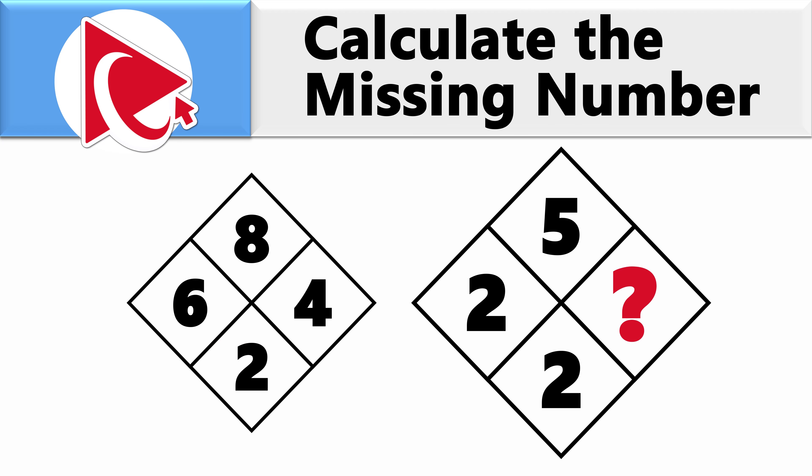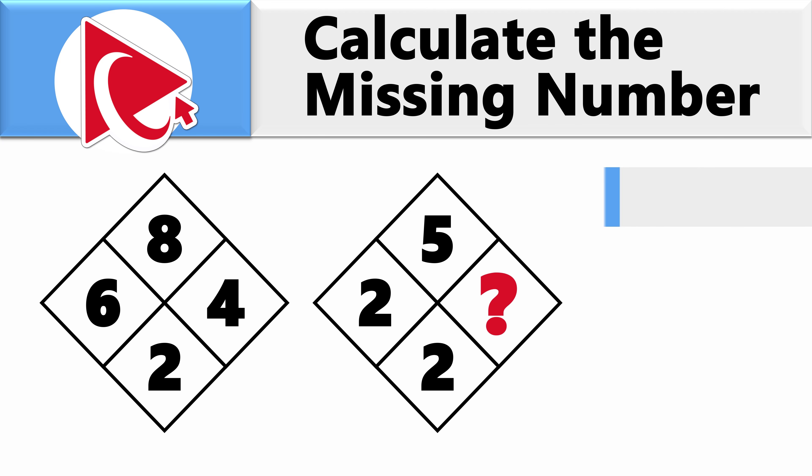And in the second diamond, numbers are 5, 2, 2, and the missing number, which you need to calculate and select out of four possible choices: Choice A, 1; Choice B, 3; Choice C, 5; and last but not least, choice D, 7.